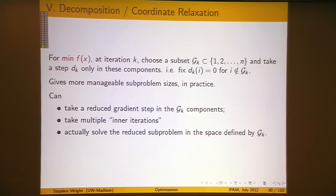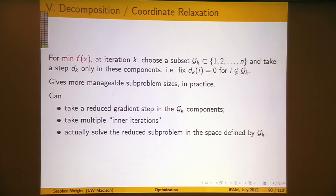I'm going to use gk to denote the subset that I'm allowed to change at iteration k, and I want to take a step — the notation is a little awkward — but this means the step at iteration k in component i. For all components i that are not in gk, I'm not allowed to move; the step is zero. You can do things like a restricted version of steepest descent on those components in gk.